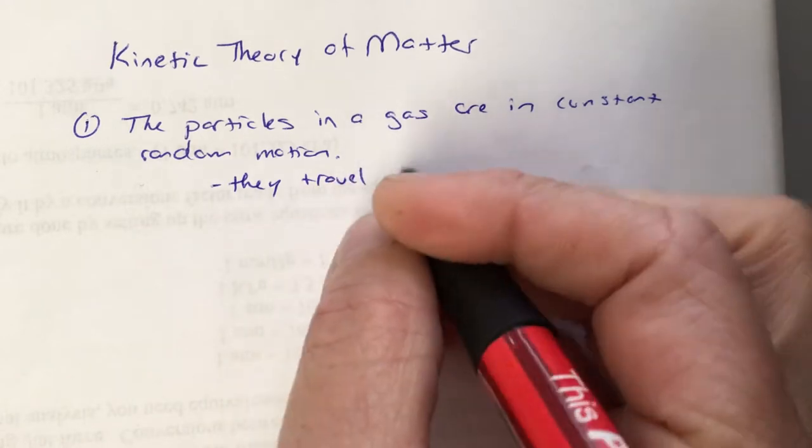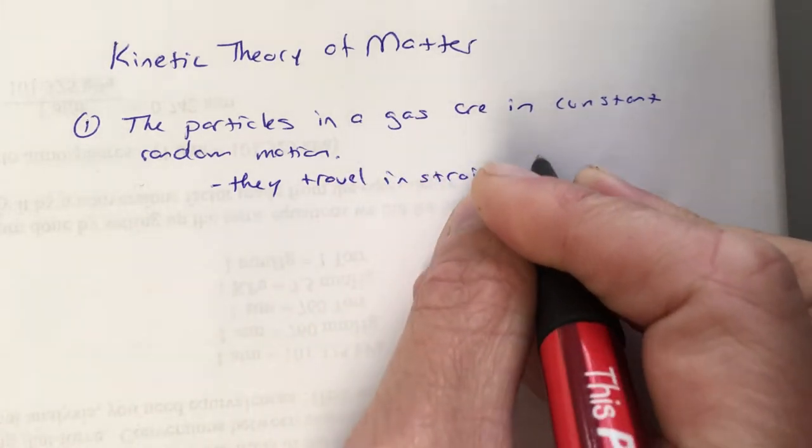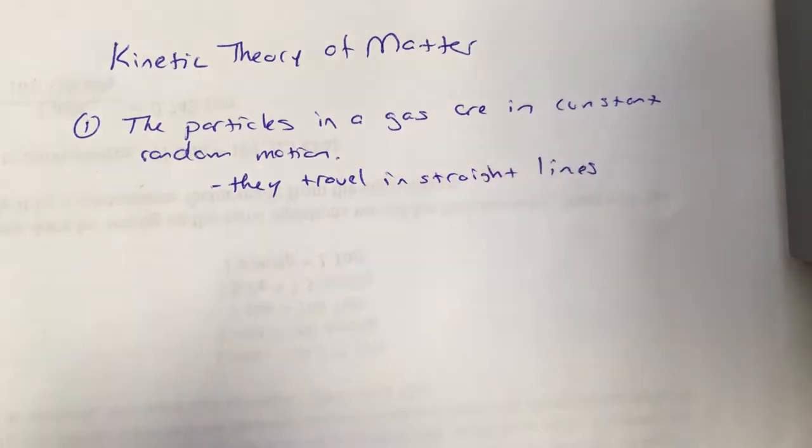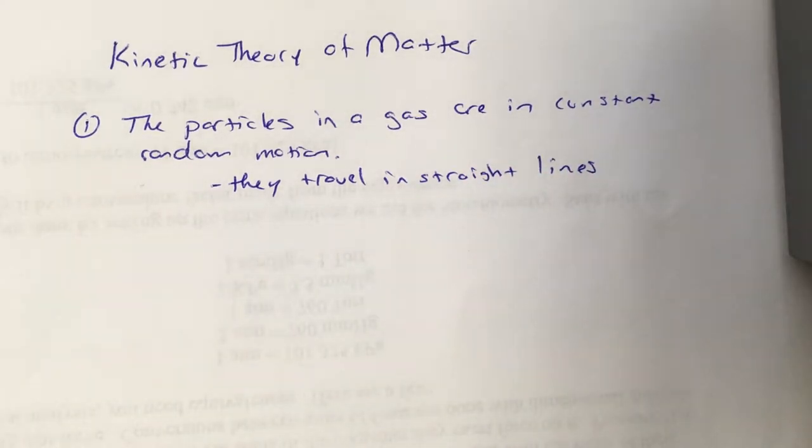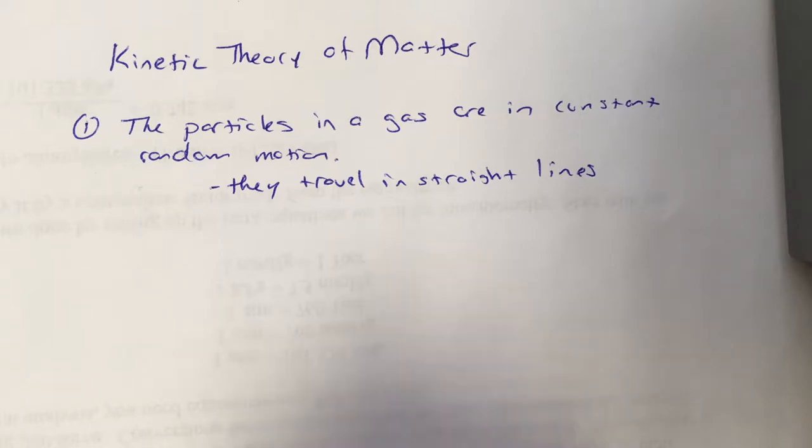They do travel in straight lines. So they're not really curving or swerving or anything like that. What's random about it is their directions. They're moving all over the place. One particle might be going up while the other one's going down, while the other one's moving left, while the other one's moving right. There's no pattern to the direction in which they move.